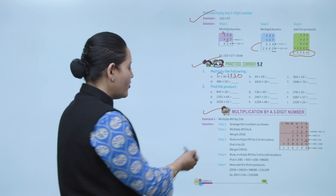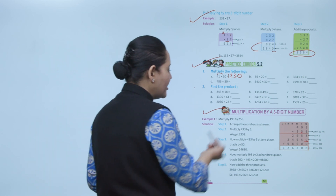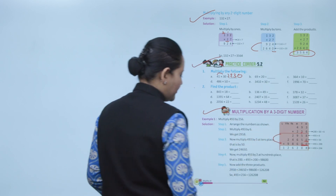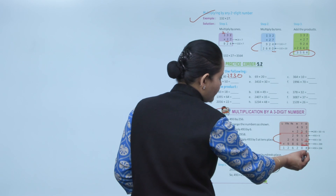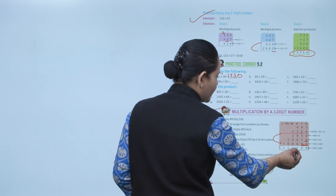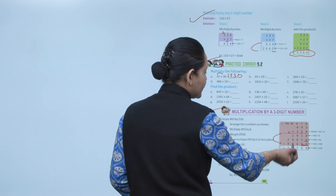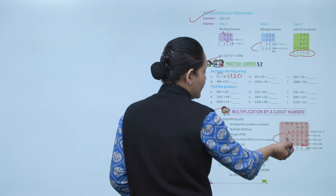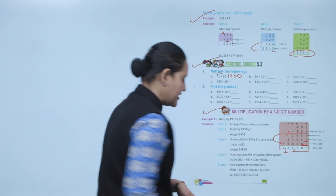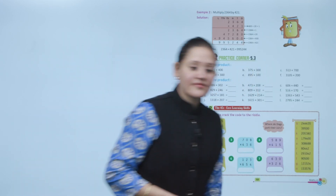Now multiply 493 by 2 at the hundreds place — this means we are actually multiplying by 200, so put two zeros and then multiply. Then add the three partial products together: working through the addition gives the final answer of 126,208.